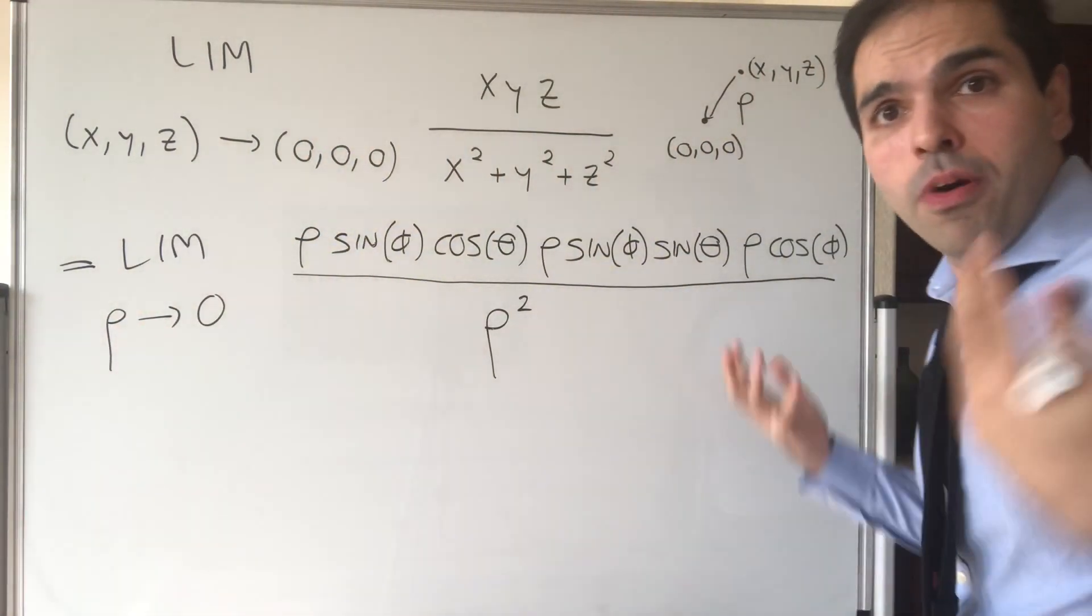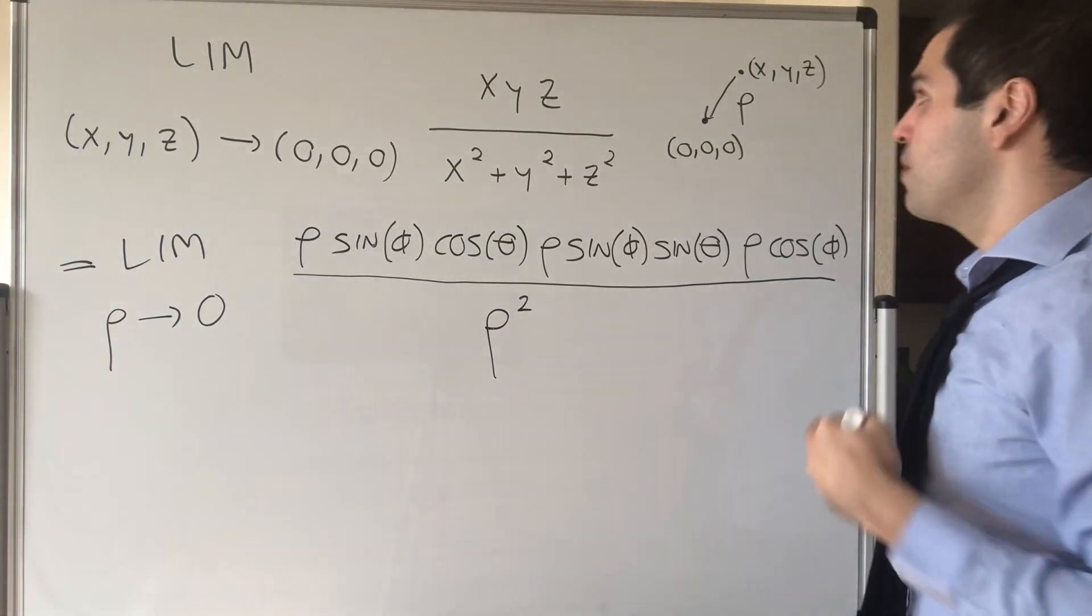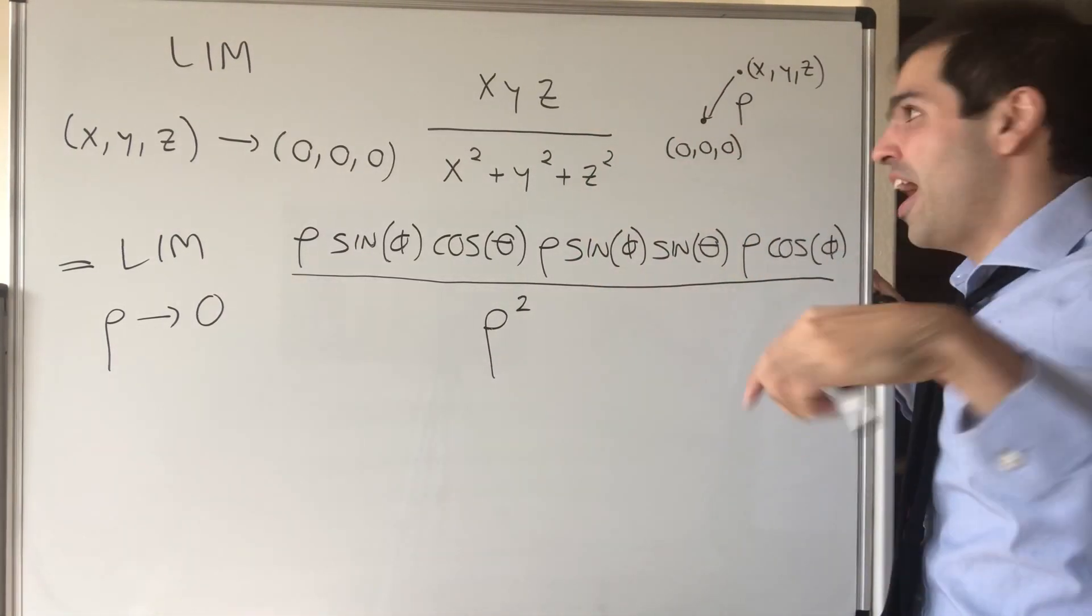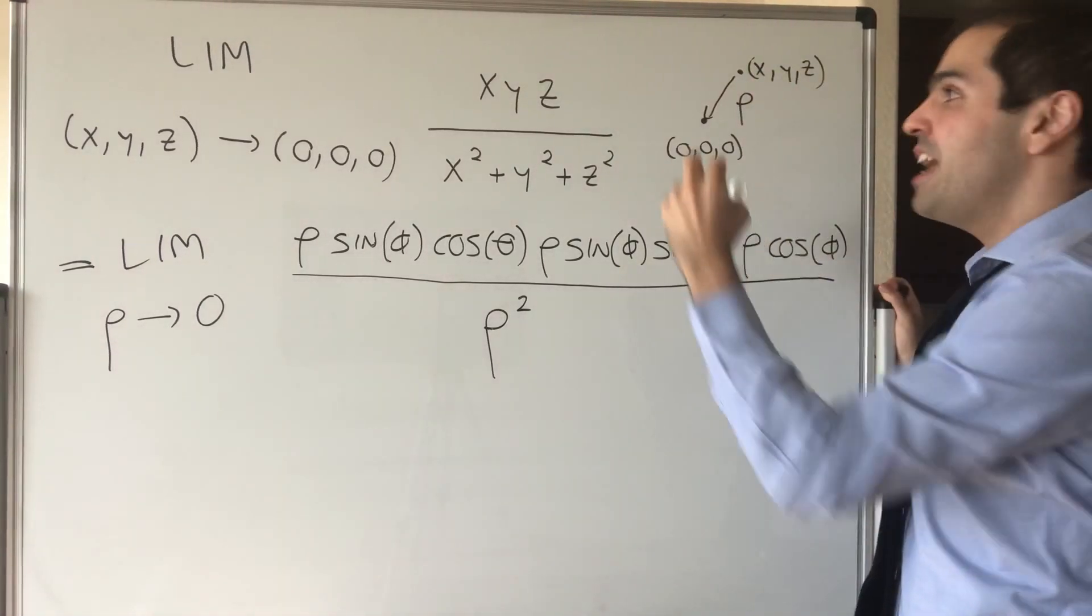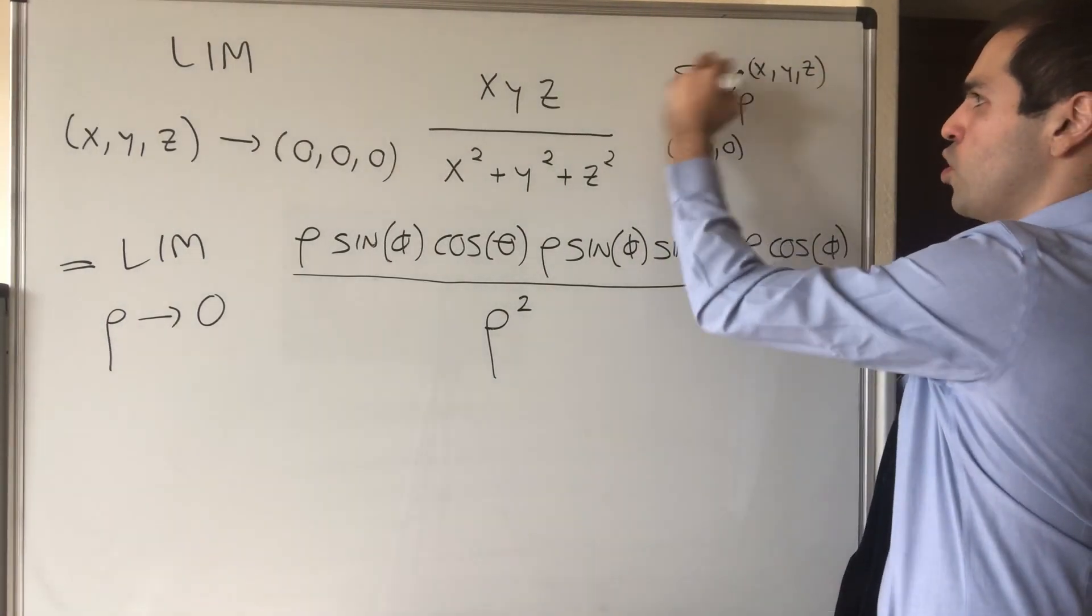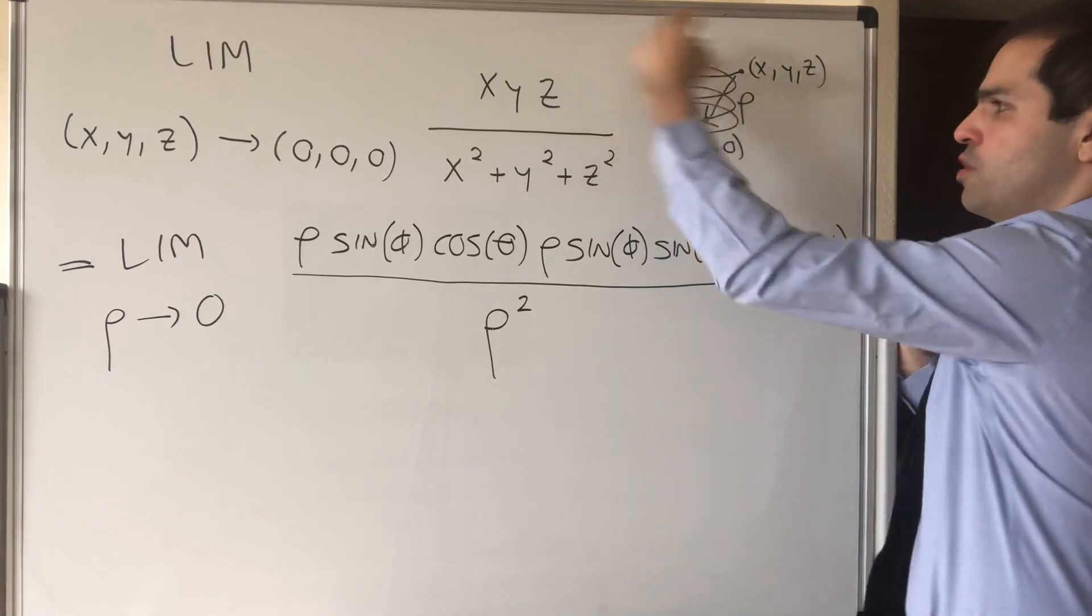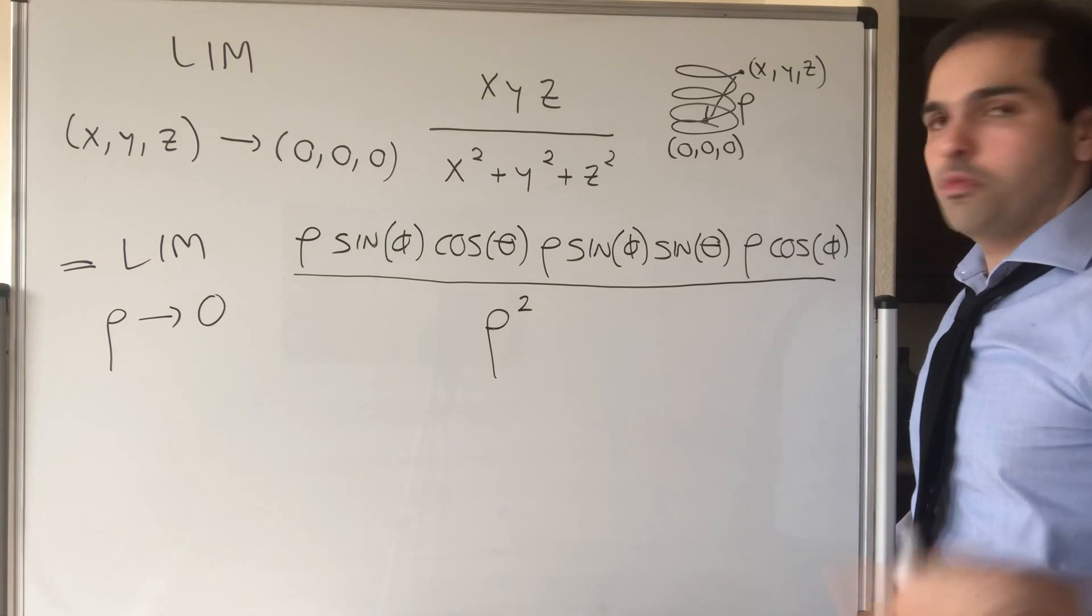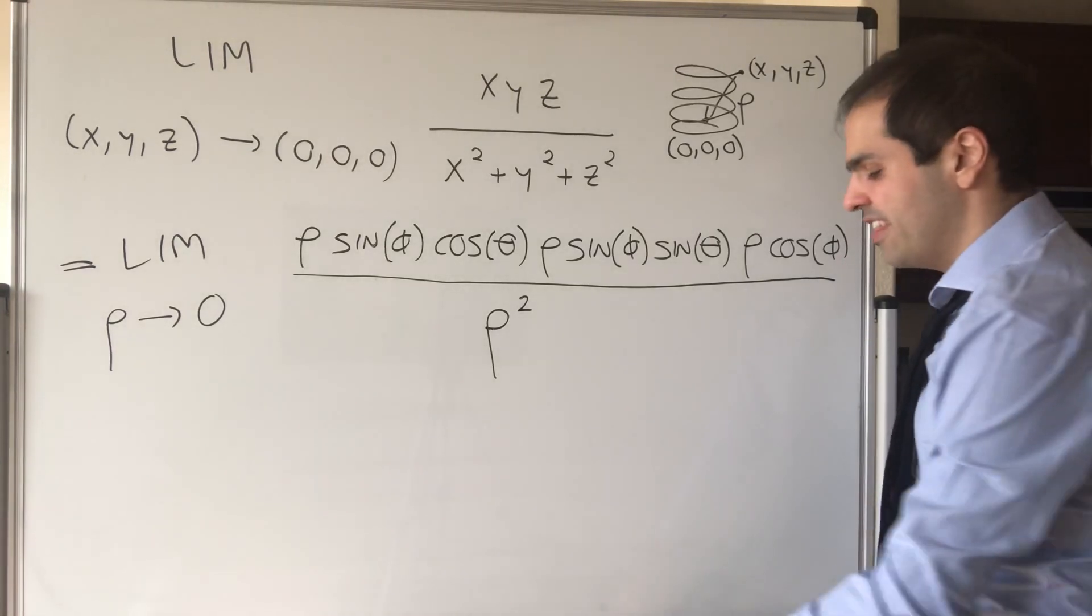But then the question is, what about theta and phi? Well, theta, which is the horizontal angle, it could actually be anything, because you could just circle this point until you go to zero, so it actually oscillates between zero and two pi. So we can't really say anything.